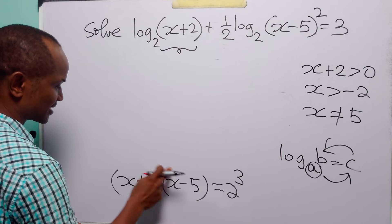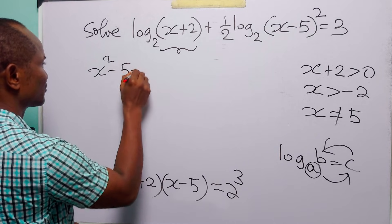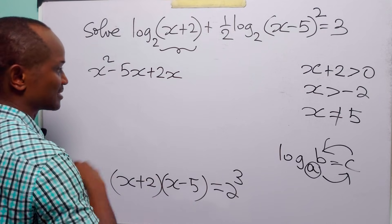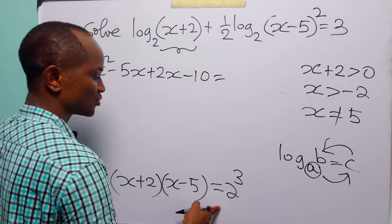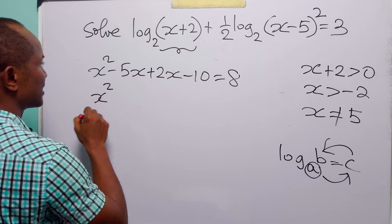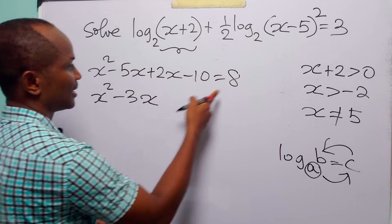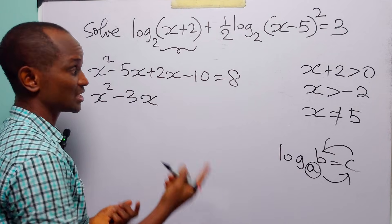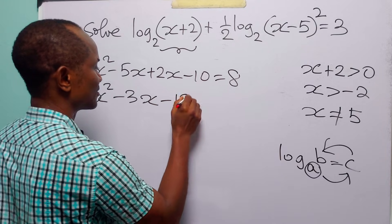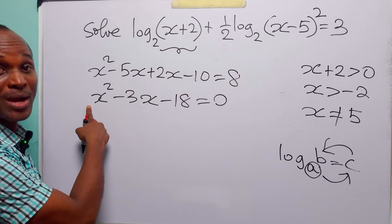Expanding the brackets: x times x is x squared, x times minus 5 is minus 5x, 2 times x is plus 2x, and 2 times minus 5 is minus 10, all equal to 2 to the power 3 which is 8. So we have x squared minus 3x minus 10 minus 8 equals 0, giving x squared minus 3x minus 18 equals 0.